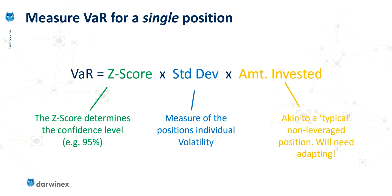For example, we might have a value at risk with a 95% confidence, or we might choose to do it with a 99% confidence. And it's the Z-score itself that determines that confidence level.